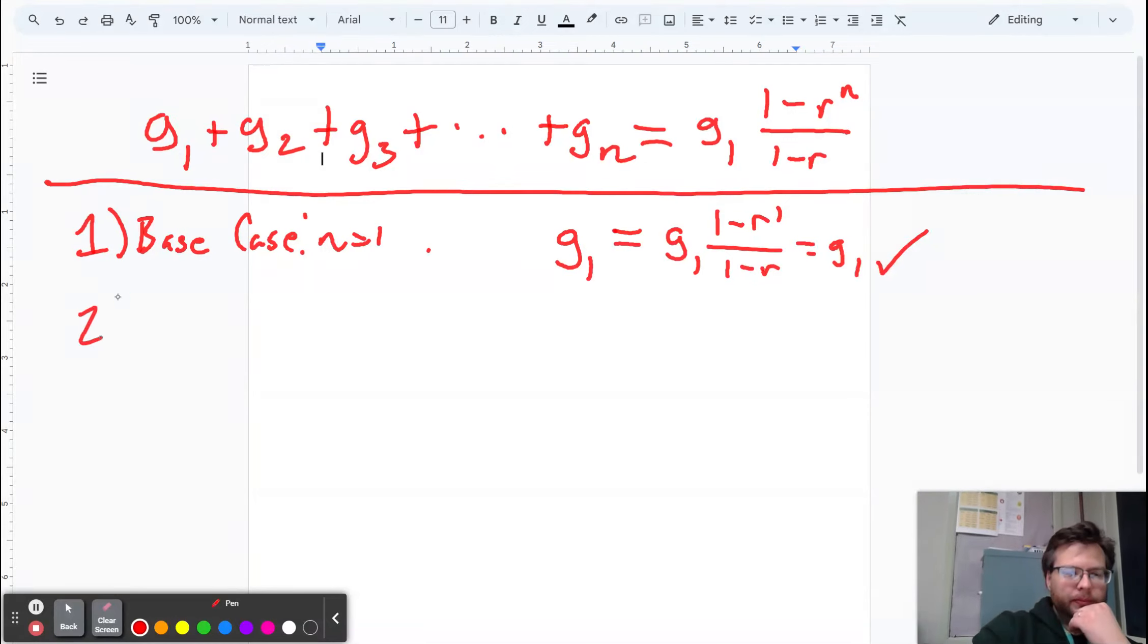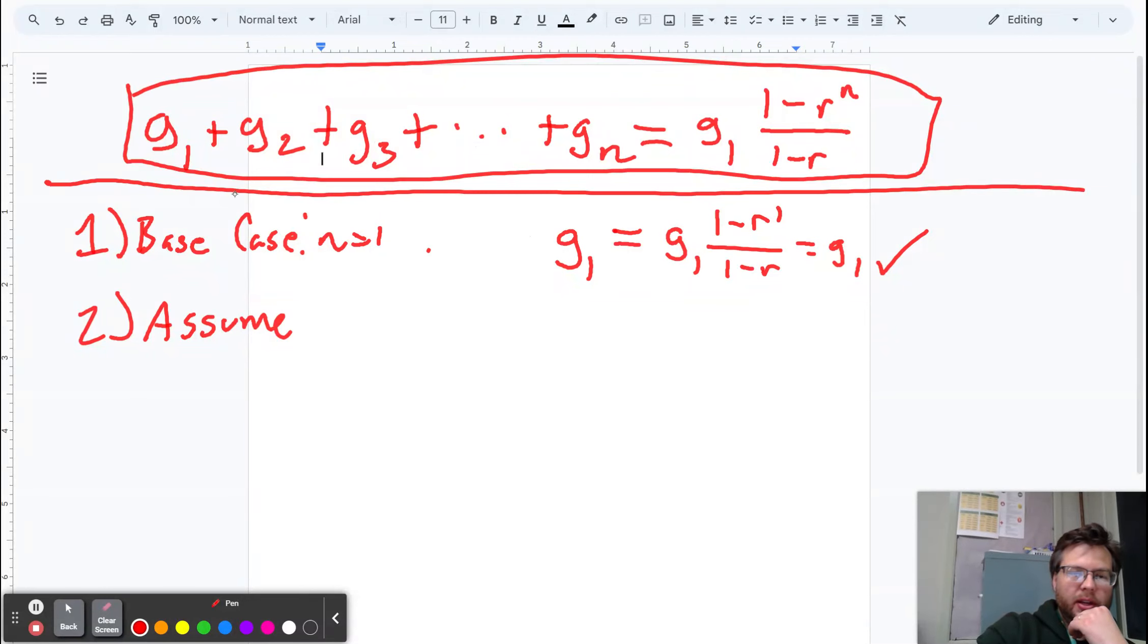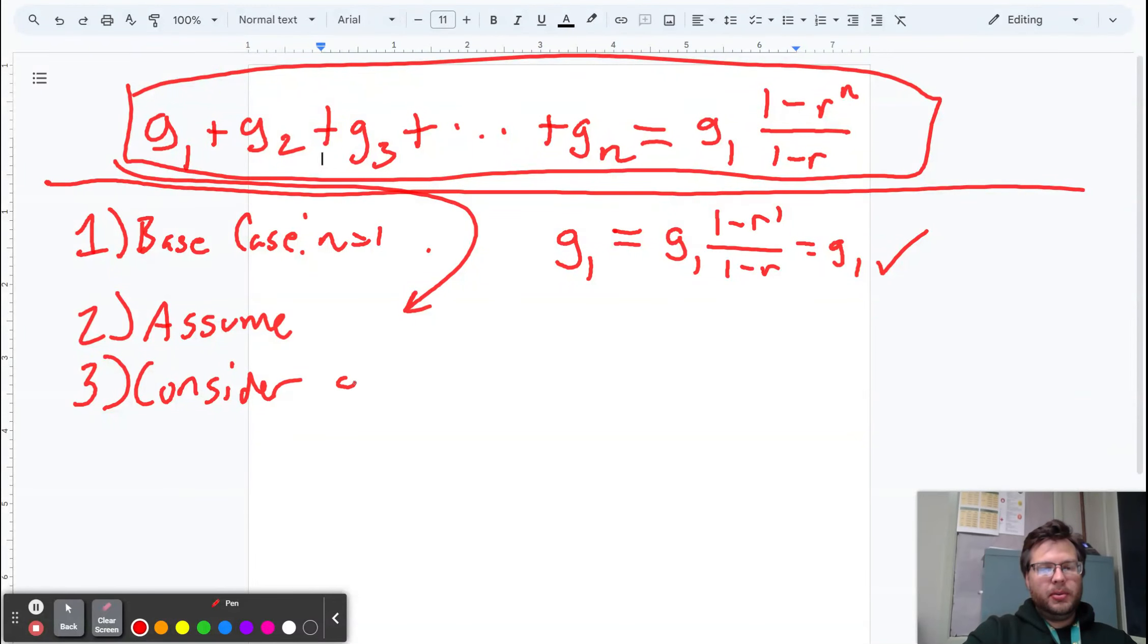So now what we're going to do is we're going to assume all of this. Rather than me writing it down again, I'm just going to grab it. I'm going to assume that that is true. Now the third step is where most of the action happens. What we're going to do is we're going to consider the n plus 1 version of the statement. So we have all of our n terms plus our n plus 1 term.